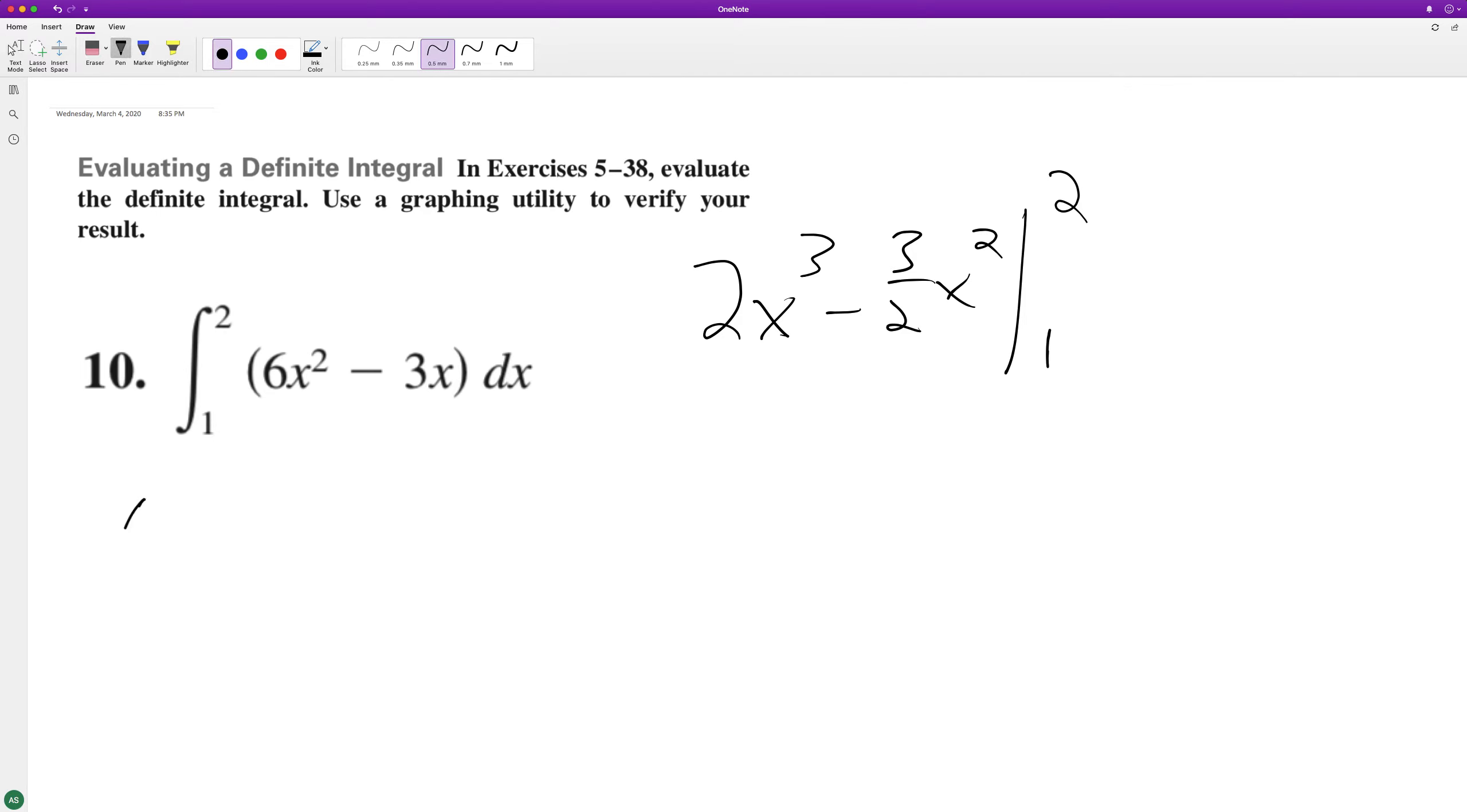So starting off, we're going to get 2 times 2 cubed minus 3 halves times 2 squared, which is times 4, and then minus 2 minus 3 halves because it's just 1.